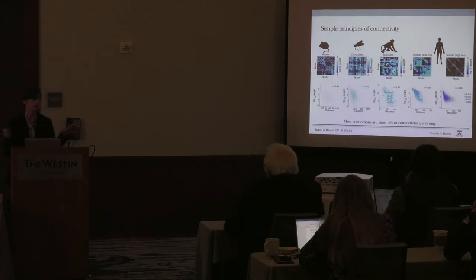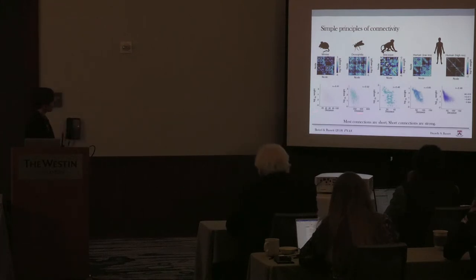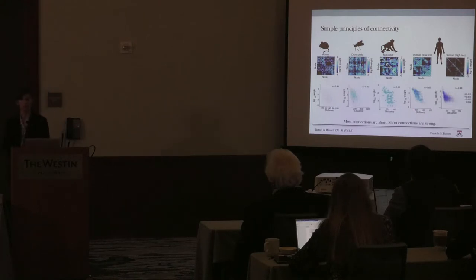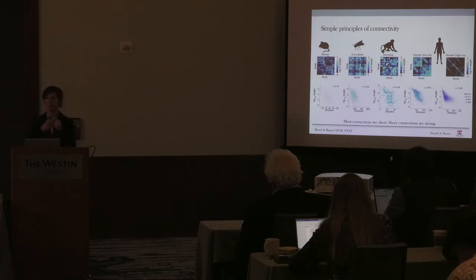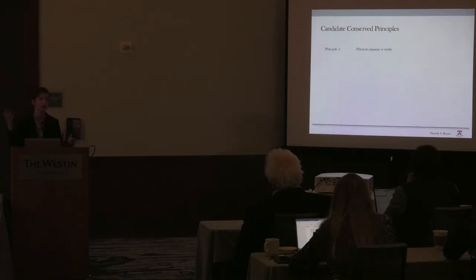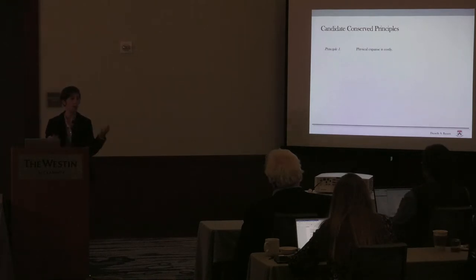Despite that difference in approach, we see very similar structural phenotypes. On the bottom row, what you see is the weight of each connection as a function of the connection's distance. You see a negative trend in the mouse, in Drosophila, in the macaque, and in both human connectomes as well. The strongest connections are the ones that are relatively short, and the weakest connections are the ones that are relatively long. In a very simplistic way, we could state a candidate conserved principle: physical expanse is costly, and that's why most connections across these organisms are relatively short.